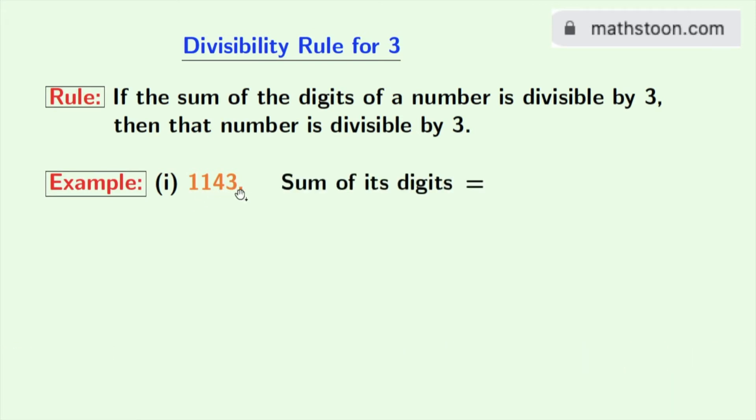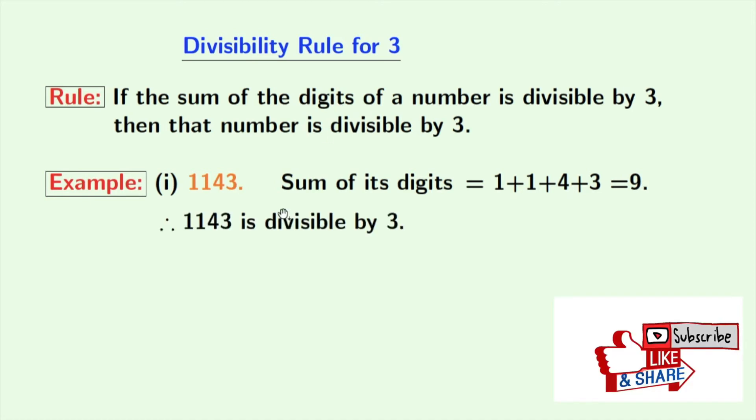The sum of its digits is 1 plus 1 plus 4 plus 3, which is equal to 9. 9 is divisible by 3. So, according to this rule, 1143 is divisible by 3.